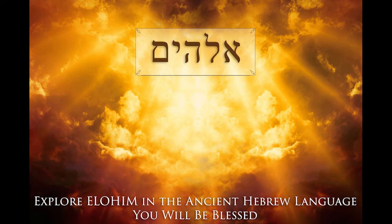Mem is the number 40. It means trials, chastisement but not judgment. The action of grace resulting in renewal, magnified renewal, an extended period of rule or dominion. Grace multiplied by renewal, which is 5 times 8. A probationary period that results in renewal.